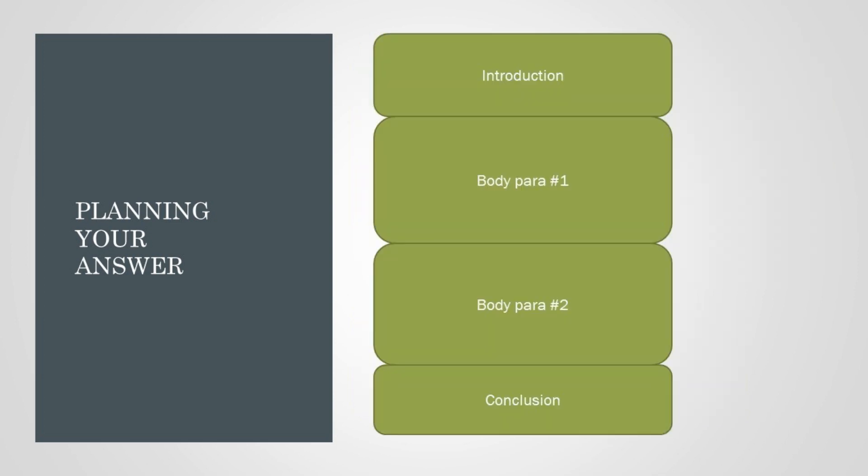Your essay structure should be simple. Don't waste too much time planning it. It must contain an introduction, a conclusion, and two or three body paragraphs. For an advantage-disadvantage question, it is pretty easy to structure. You can just put the advantages in one body paragraph and the disadvantages in another.